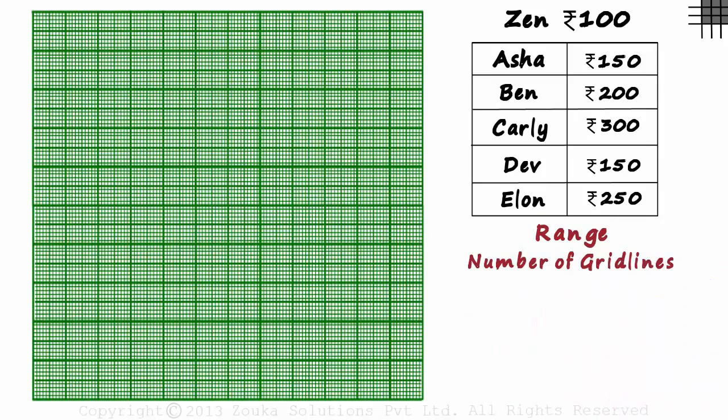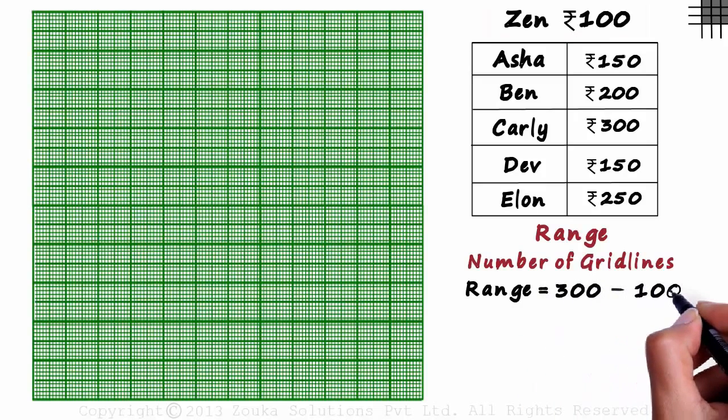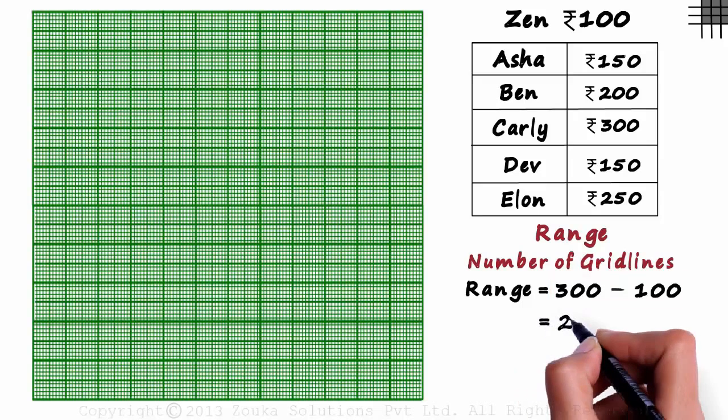Let us find out the range first. The largest value in this set is 300, which is Carly's weekly allowance. And the smallest value is 100, which is Zen's allowance. The range will be 300 minus 100, the largest value minus the smallest value. It equals 200.